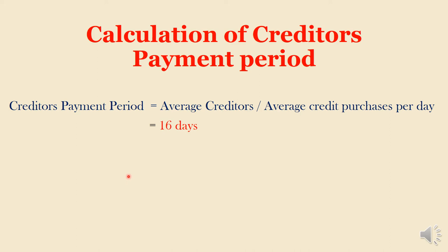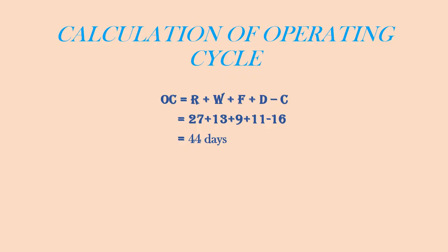Now we are able to calculate the operating cycle. The formula is: operating cycle equals raw material conversion period plus work-in-progress conversion period plus finished goods conversion period plus debtors collection period minus creditors payment period. So: 27 + 13 + 9 + 11 − 16 = 44 days. This is the operating cycle of 44 days.